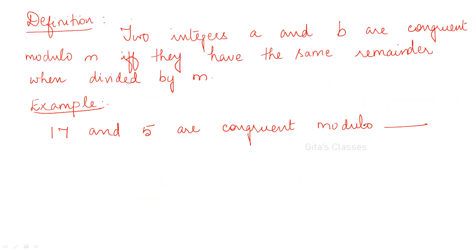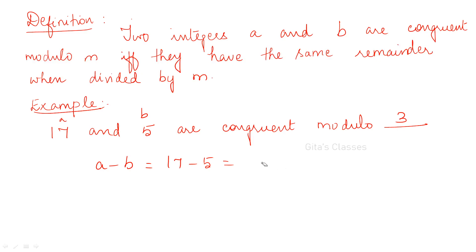Another definition: two integers a and b are congruent mod m if and only if they have the same remainder when divided by m — it means the same thing. For example, 17 and 5 are congruent mod m. Here a is 17 and b is 5. a minus b is 17 minus 5, which is 12. So you can write this as congruence modulo 3, or modulo 4, or modulo 2 also, because 4 into 3 gives 12.